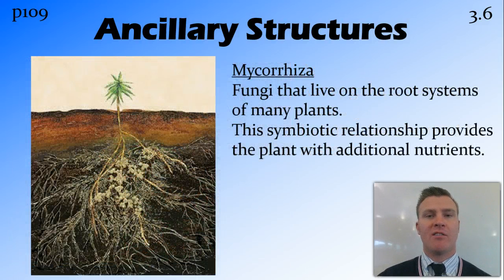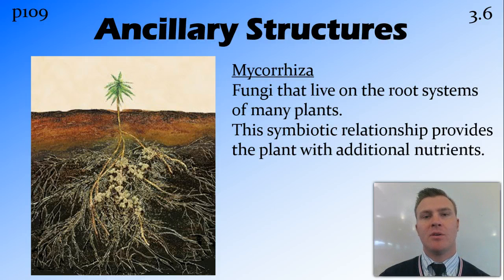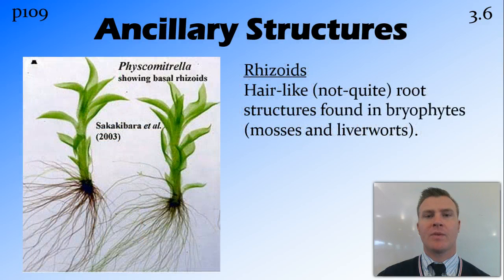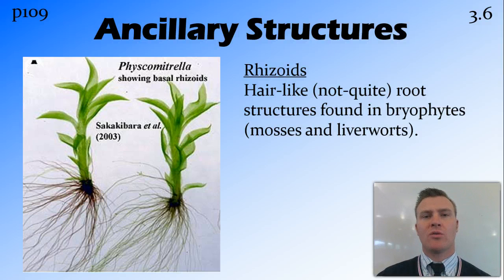The vast majority of plants have root systems which are covered in mycorrhiza. Mycorrhiza are a fungi that lives in the root system, and they have a symbiotic relationship with the plant and provide the plant with additional nutrients. Another ancillary structure is rhizoids. Rhizoids are not true roots — they're hair-like filaments that act like roots but have a different structure, and they're found in bryophytes, which include mosses and liverworts.